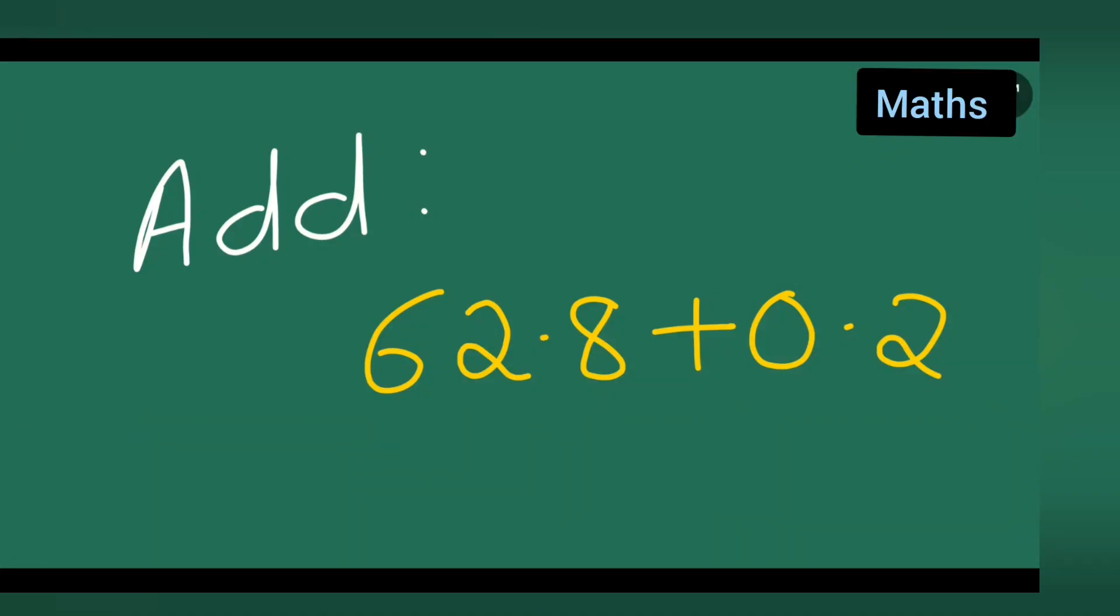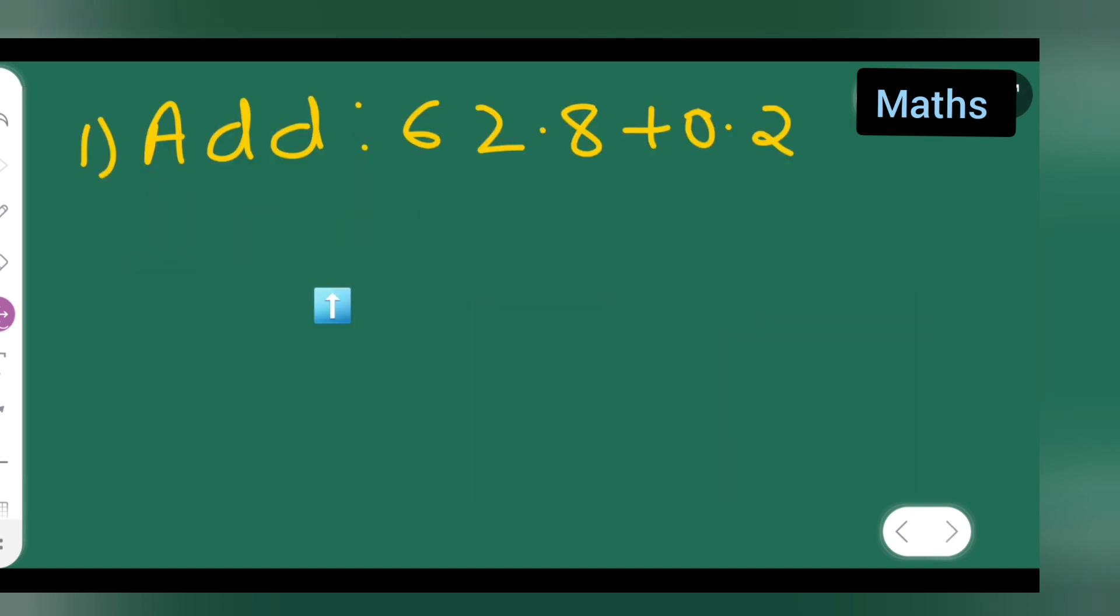So welcome for today's class of mathematics. Let us see how to add 62.8 plus 0.2. Okay, so let us add these two numbers and see how to add. First, what I'll have to do is take down the question: add 62.8 plus 0.2, write it as it is.